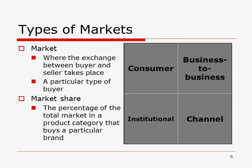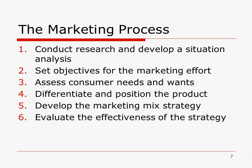Here are the types of market: consumer, business-to-business, institutional, and channels market. A market is where the exchange between buyers and sellers takes place. Market share is a particular type of buyer market — it is the percentage of the total market in a product category that buys a particular brand.